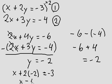x minus 4, 2 times negative 2 is negative 4, equals negative 3. Now with some simple algebra, I'll just take the negative 4 over to the right side of the equation by adding 4 to both sides.